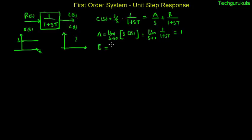Now similarly, if you find for the value of b, limit s tends to minus 1 over t, because the root of the second term denominator is minus 1 by t, times 1 plus st times c of s. If you find this value, which will be s tends to minus 1 over t times 1 by s, will have minus capital T.